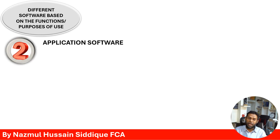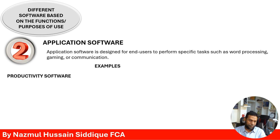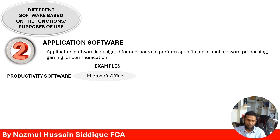Next is application software. Application software is designed for end users to perform specific tasks such as word processing, gaming, or communication. One kind is productivity software — examples include Microsoft Office products like Word, Excel, and PowerPoint.